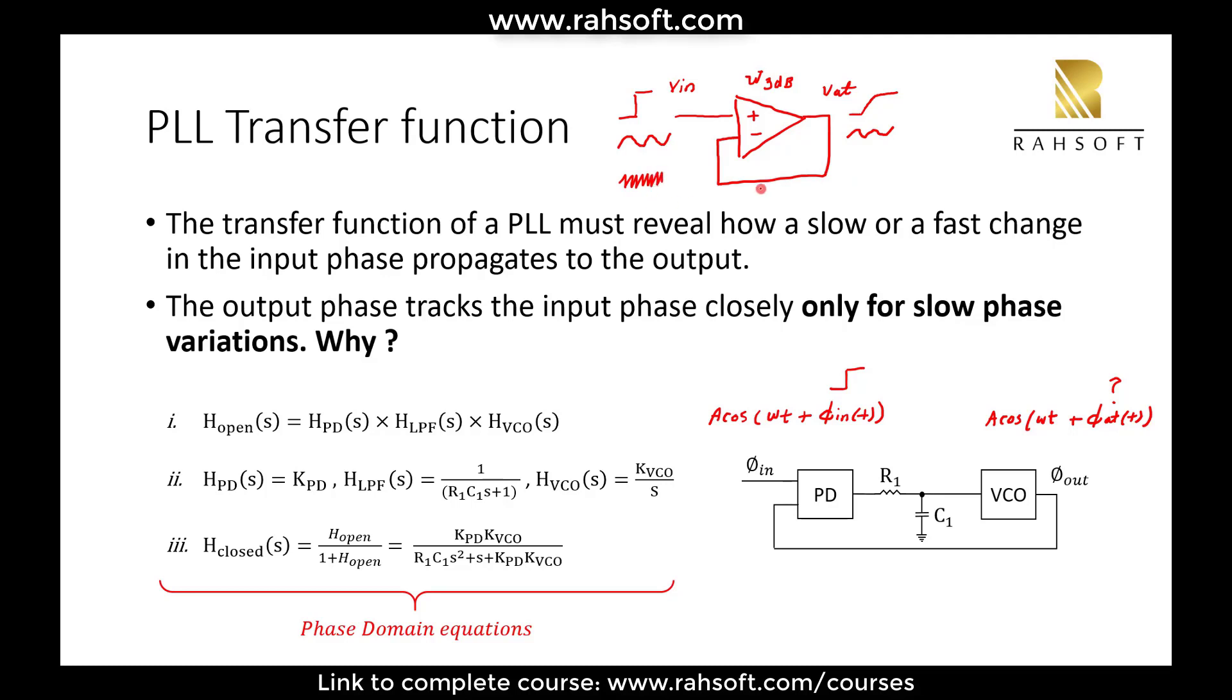But for example, if we increase the frequency, the output won't be able to do that. Because if this frequency here, omega 1, is much higher than omega 3 dB of this op-amp, or let's say unity gain bandwidth omega u, this loop is going to get weaker and output won't be able to track this input.